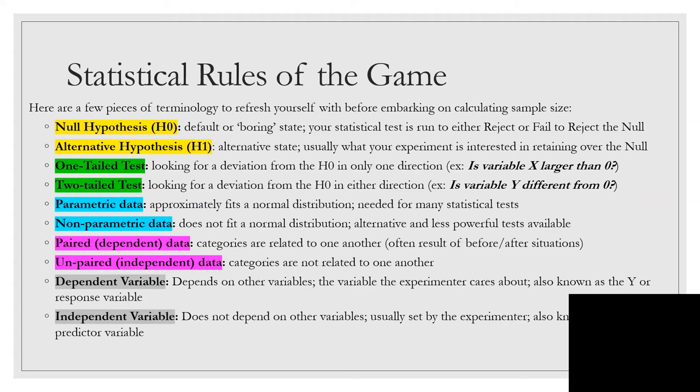The next set, parametric versus non-parametric. Parametric, also known as normal, is data that fits a normal distribution. This is an assumption needed for a lot of the statistical tests. If your data does not fit a normal distribution, so it's not normally distributed, it's known as non-parametric data. There are a lot of alternative tests to run, but they're usually less powerful, so you only run the tests if you can't run the parametric ones.